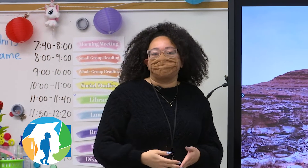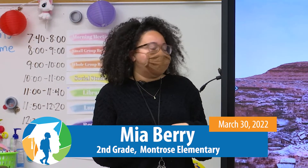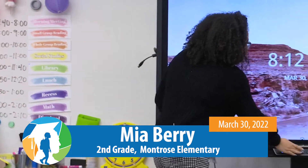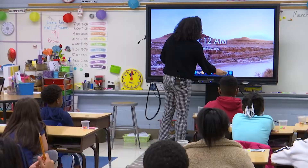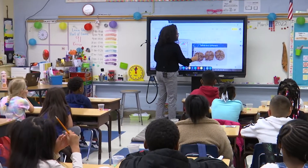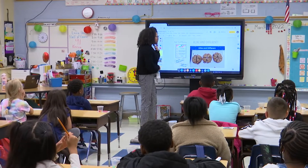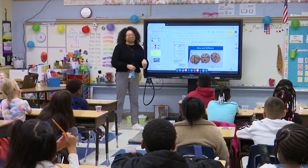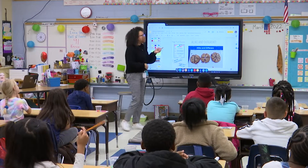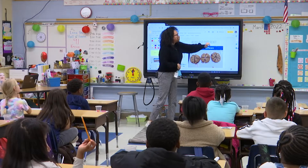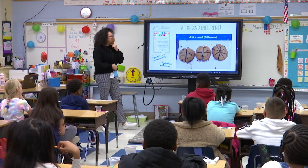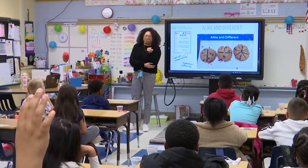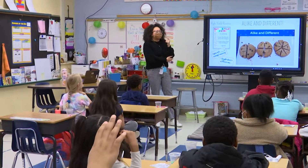Good morning, this is Miss Barry at Montrose Elementary and this is our second grade class. We're going to be talking about fractions today. The first thing we're going to do is work with our fractions and think about a picture. I want you to think about how each of these things are either alike or different. We're going to look at this picture of all those cookies and think: what ways are they alike or different?